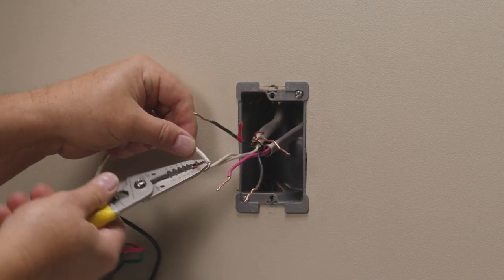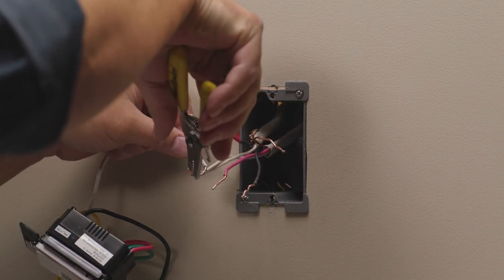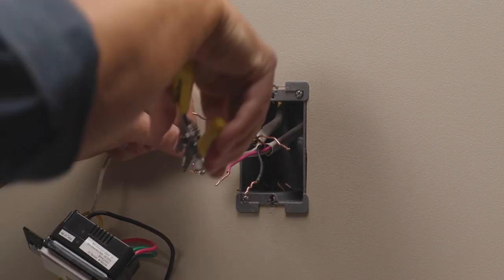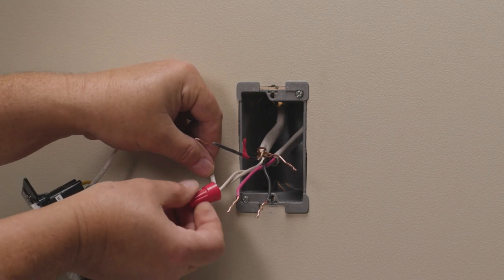First, connect the neutral wires by twisting them together in a clockwise rotation. You may have many neutral wires in your box. Use the large red wire nut to connect neutral wires. The wires should not pull out of the wire nut when tight.